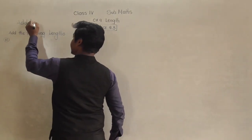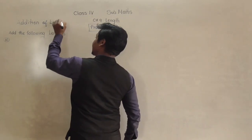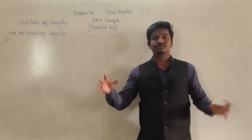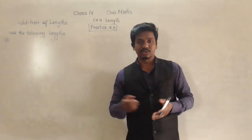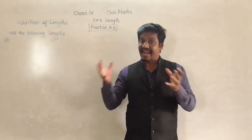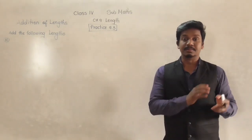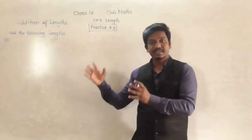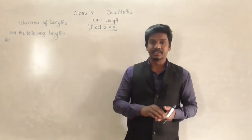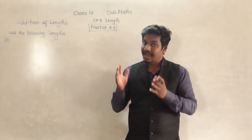Before this we have learned the conversion of length. So when we have the length of many things, two or more things together at a time, then we can add those two lengths, just as we add our normal regular numbers. Similarly, we can add the length of two things or three things or many things.